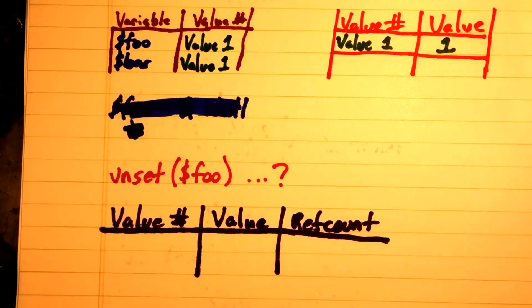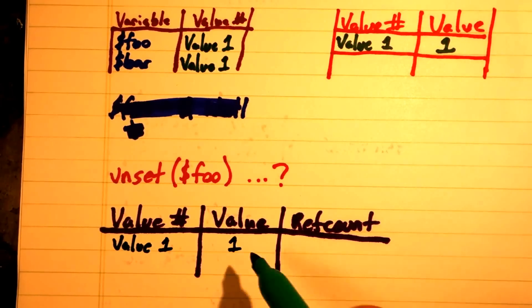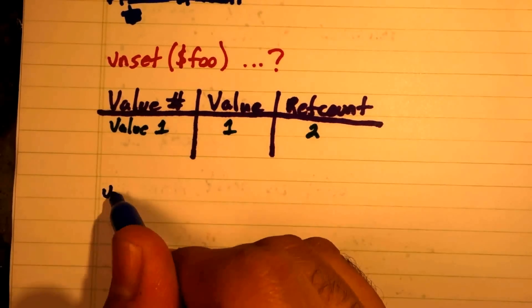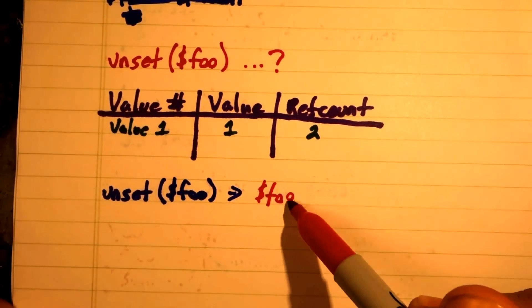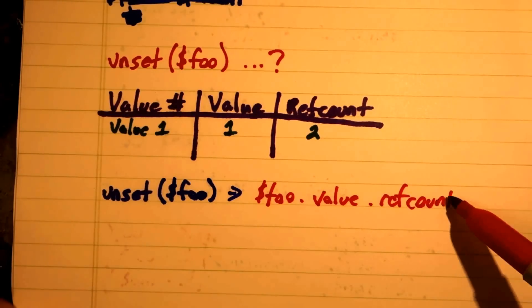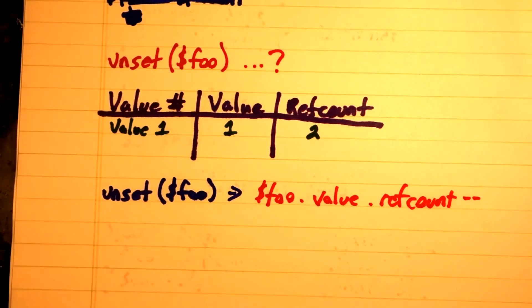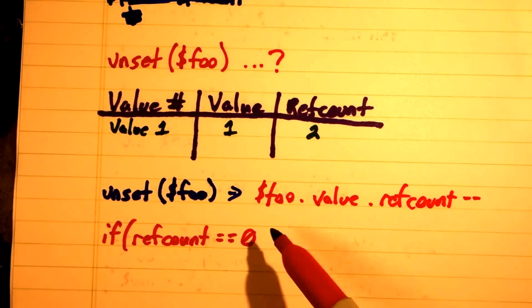So, the value container now has two fields. The value itself and a reference counter, which is also known as a ref count. Every time we copy a variable, we increase this ref count. And every time we delete a variable, we decrease the ref count. But if the ref count ever hits zero, we can safely delete the value.